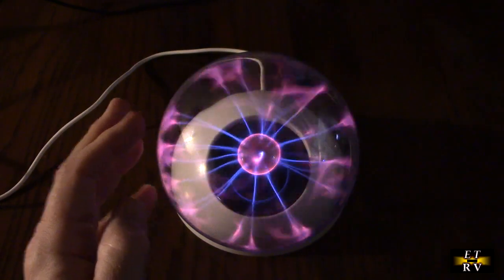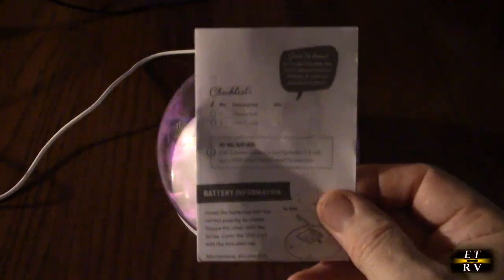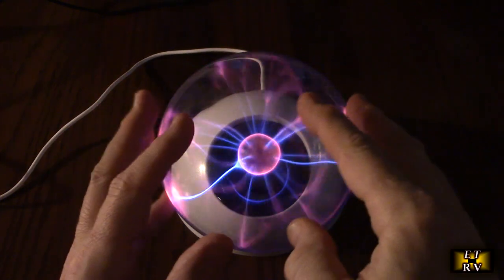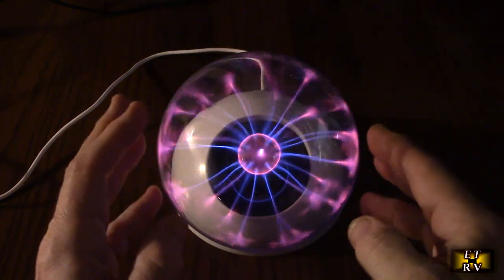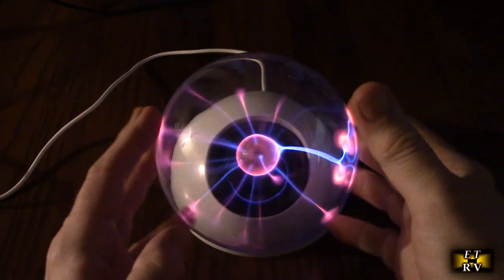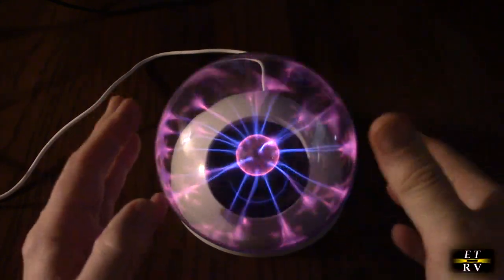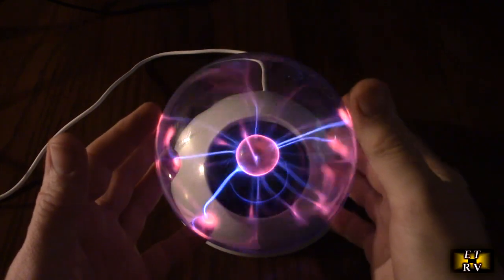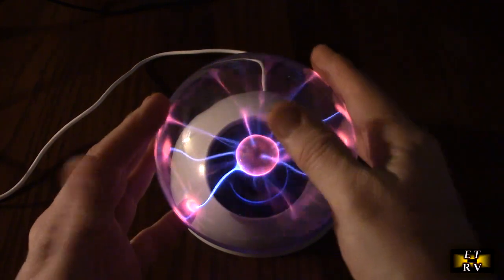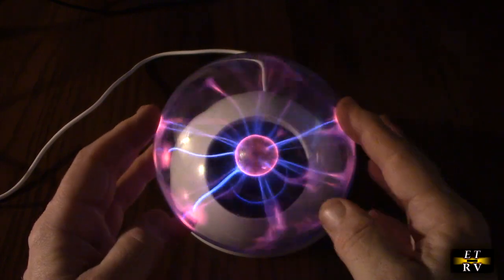So it comes with a nice instruction manual. And they actually talked about the history of this, how it was invented by Tesla in the 1800s. And then it became really popular in the seventies and became portable and as a really cool device that you can put in your house or you can put it next to your bed to sleep because it is relaxing to see all these plasma lights and everything on here.